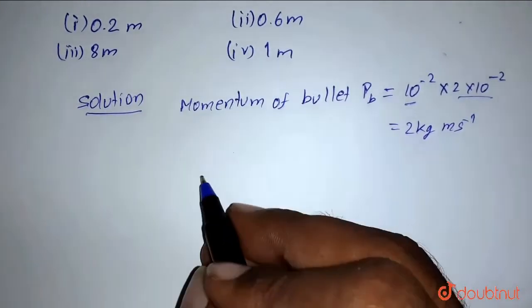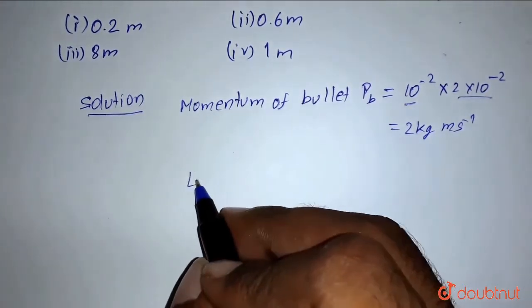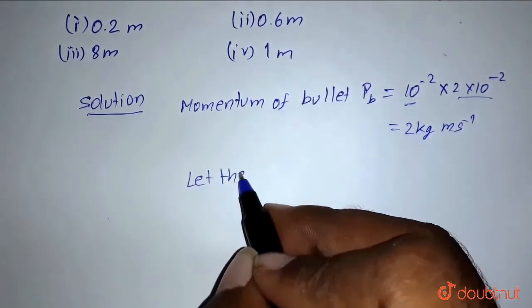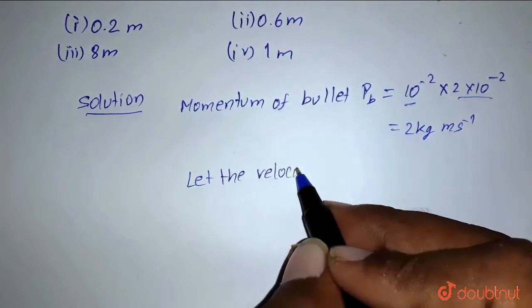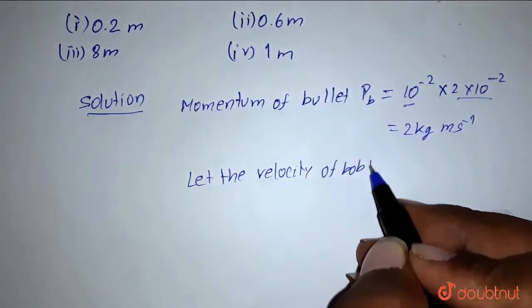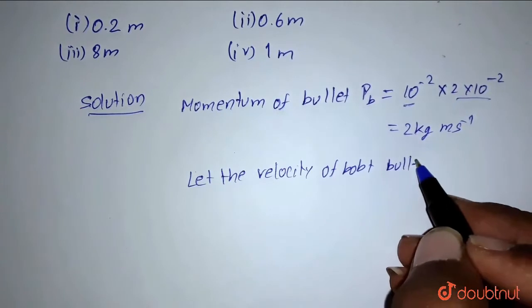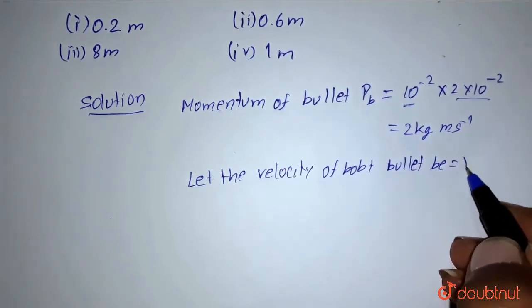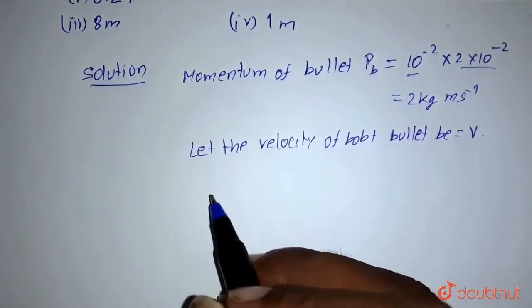Let the velocity of bob plus bullet be V. So by conservation of momentum,